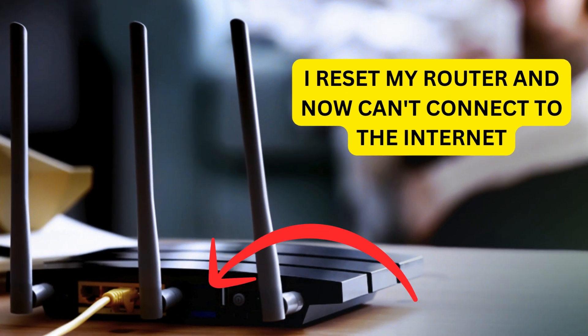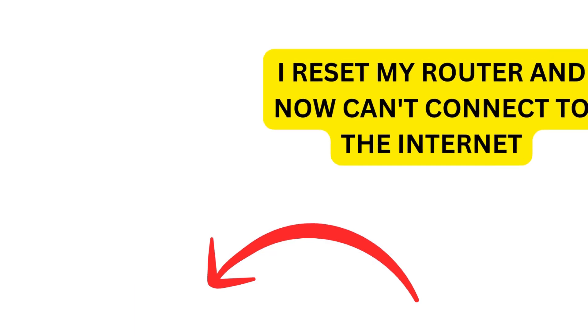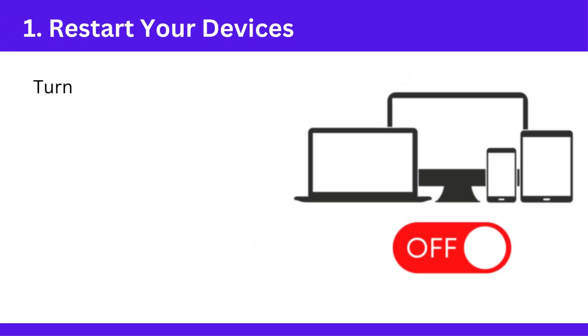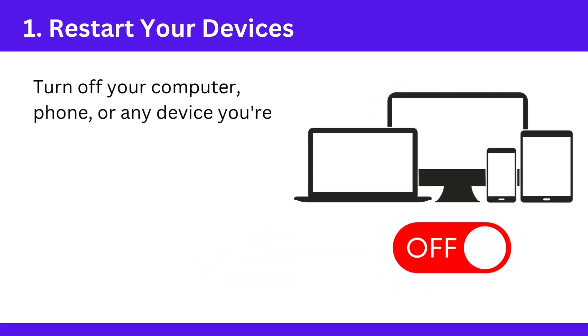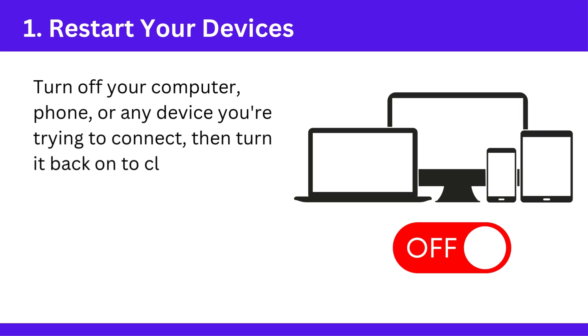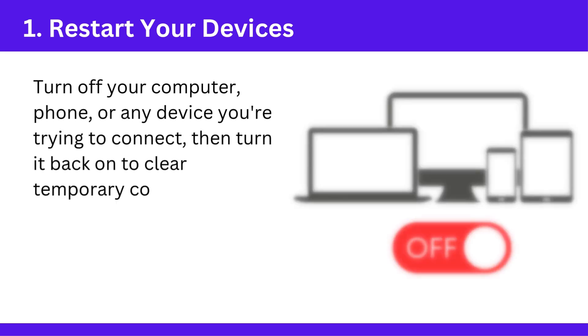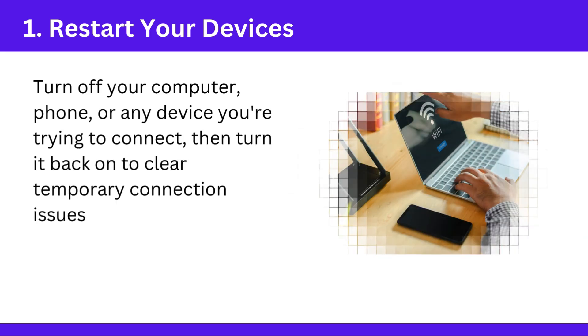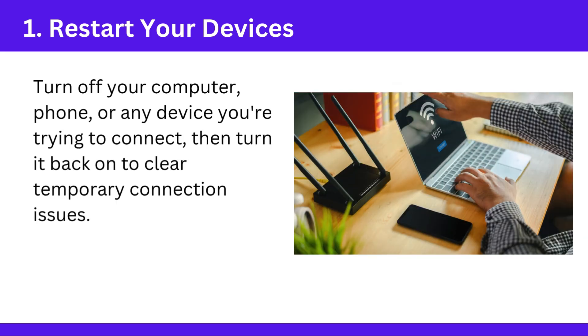I reset my router and now can't connect to the internet. Step 1: Restart your devices. Turn off your computer, phone, or any device you're trying to connect, then turn it back on to clear temporary connection issues.